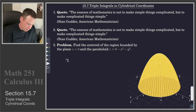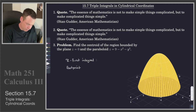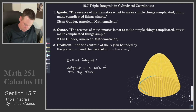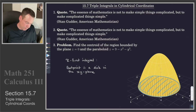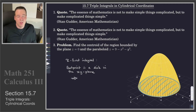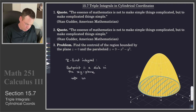If we go through and we set up the integral for this — maybe we'll set it up as a z-first integral — then what we end up noticing is that the footprint is a disk in the xy-plane. It's this disk down here that would be the footprint. And with a disk in the xy-plane, when we go and do the double integral, then we'd like to convert this to polar coordinates.